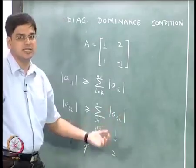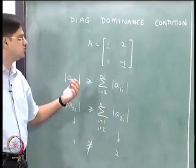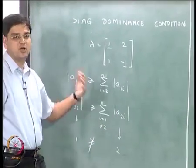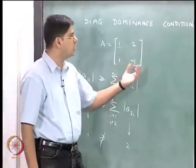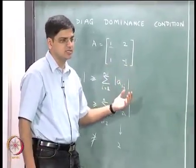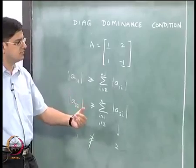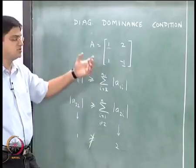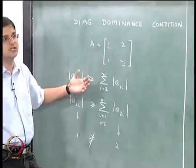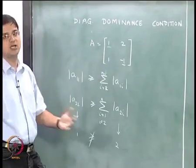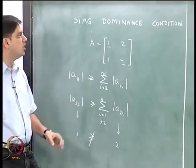In the case where the diagonal dominance condition is not met, we cannot guarantee the stability of the Gauss-Seidel iteration. So as we increase the number of iterations, the Gauss-Seidel iteration may not converge to the true value.